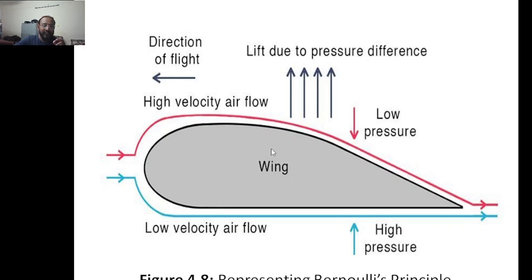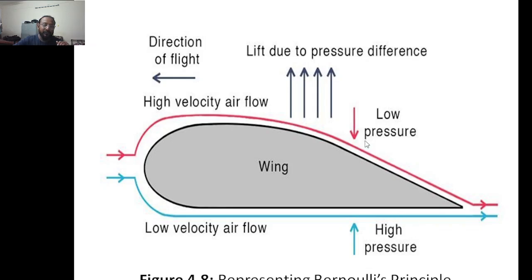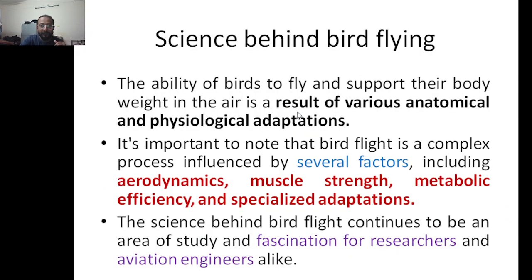This is how the bird wing looks and how lift is generated. Whenever the bird is flying, it creates a pressure difference — low pressure on top and high pressure below. This pressure difference makes the bird take flight, which is how it goes up.